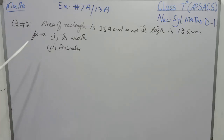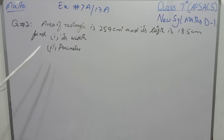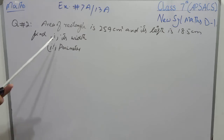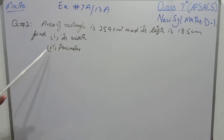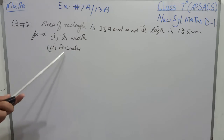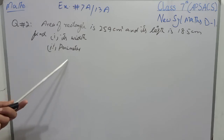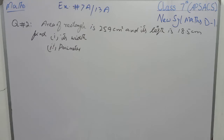We will apply the formula: area of a rectangle is equal to length multiplied by breadth, and then we will find the width. Then we will apply the formula: perimeter of a rectangle is equal to 2 into length plus width, and then we will put the values and find the perimeter.